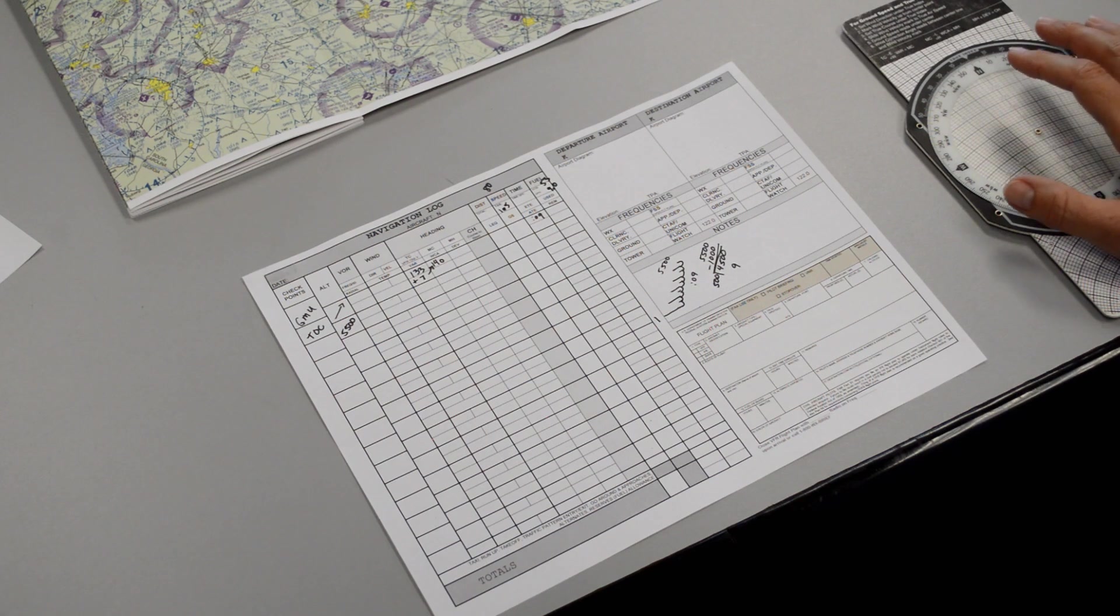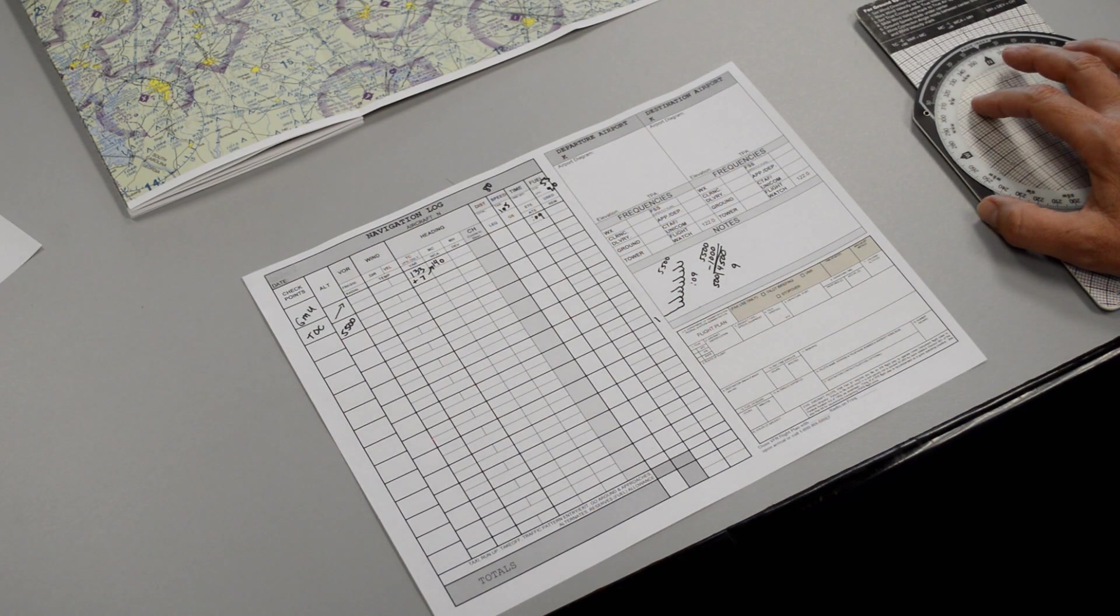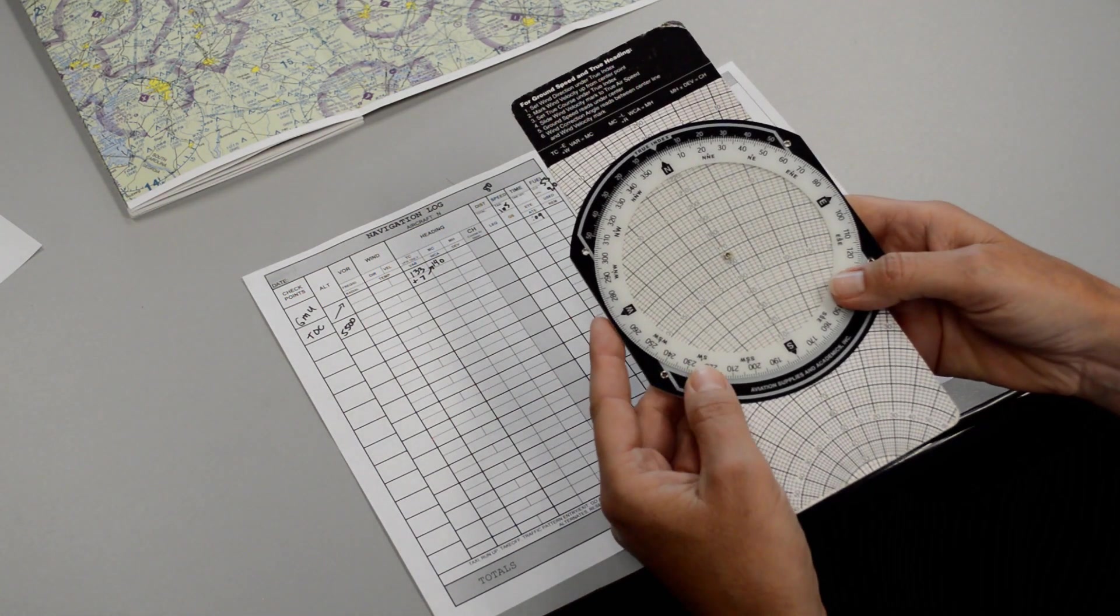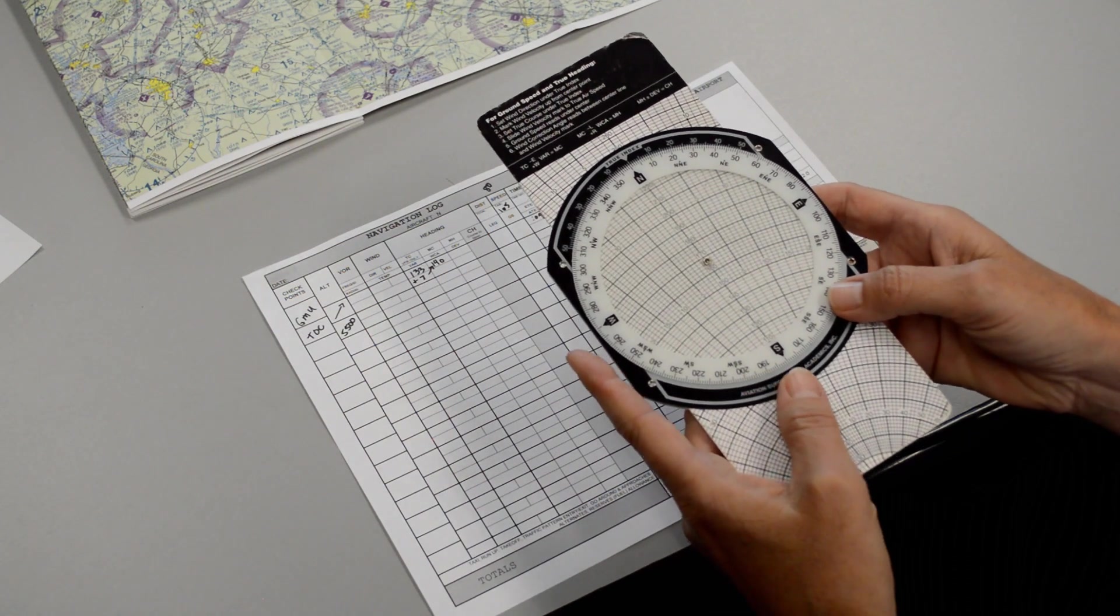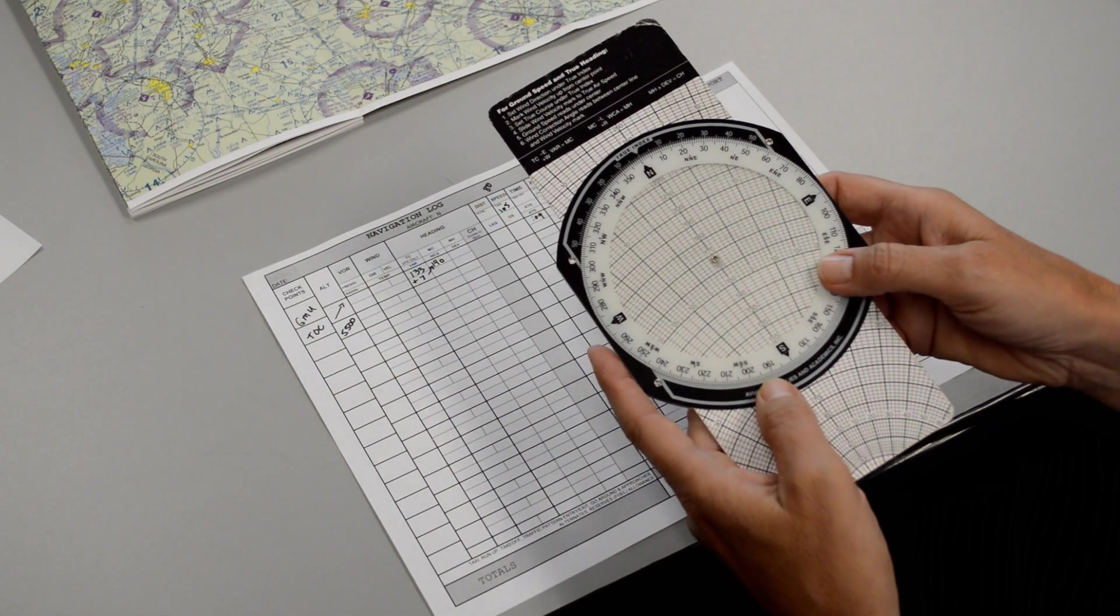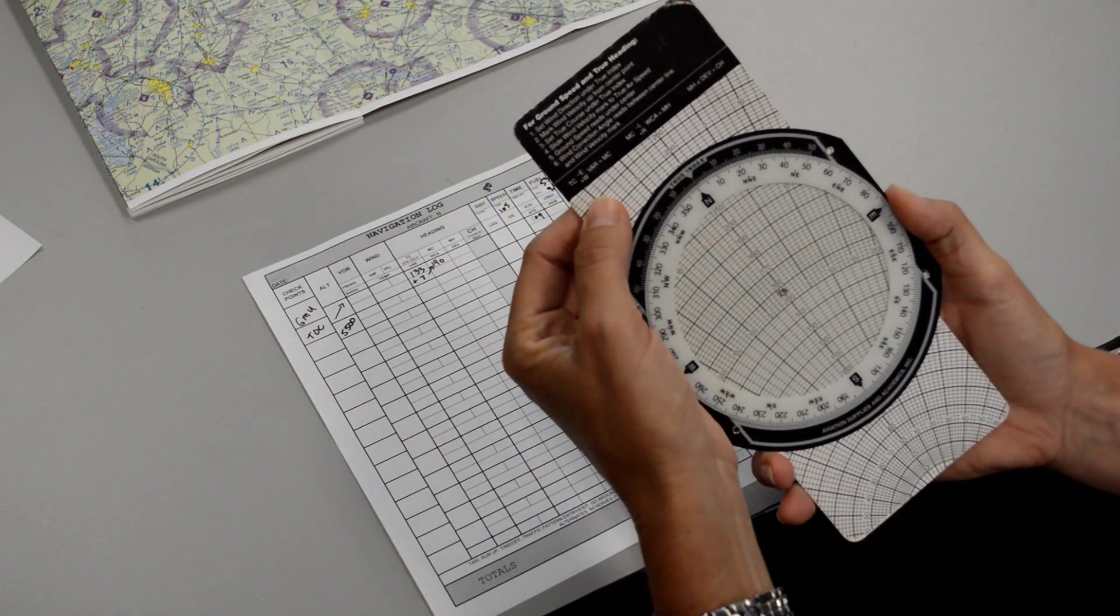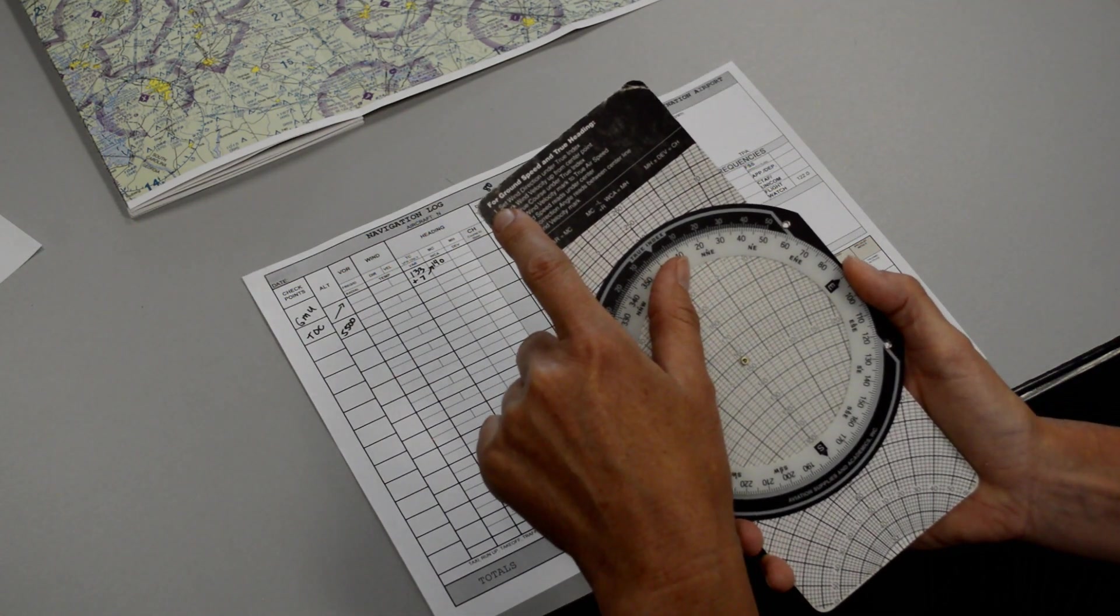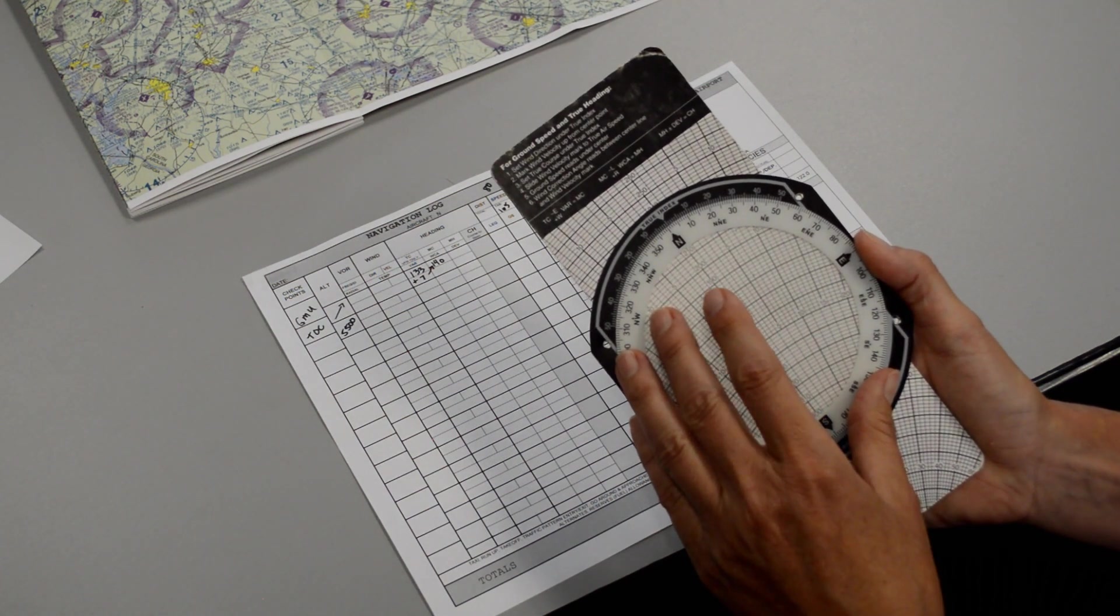Number 11 on a cross-country flight plan is to calculate our ground speed and wind correction angle using our flight computer. This is also known as an E6B, it's also known as a whiz wheel. I guess we call it a whiz wheel when you get really fast at it, but we're going to refer to it as an E6B today. How we use this is by following the directions at the top, and this allows us to calculate out both our wind correction angle and our ground speed.